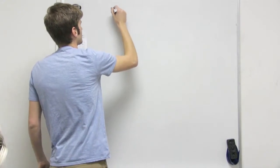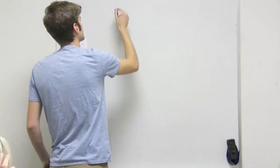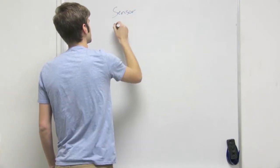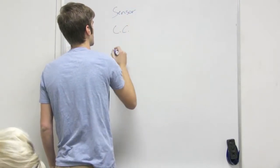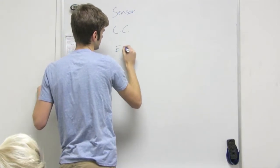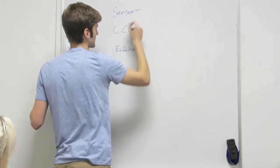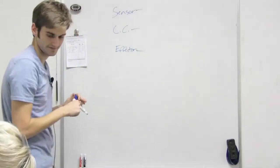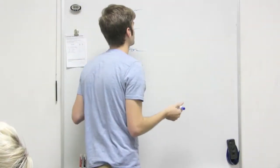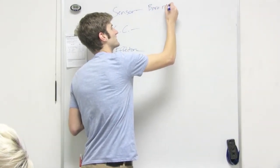Blood pressure. So we have our sensor, control center, and our effector. Our sensor is what's called a baroreceptor.